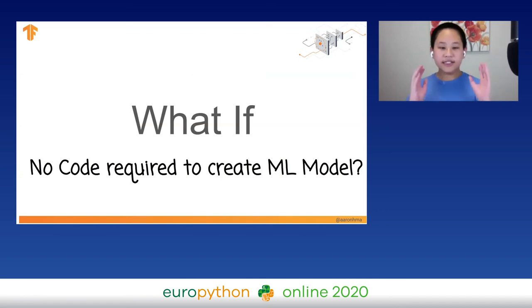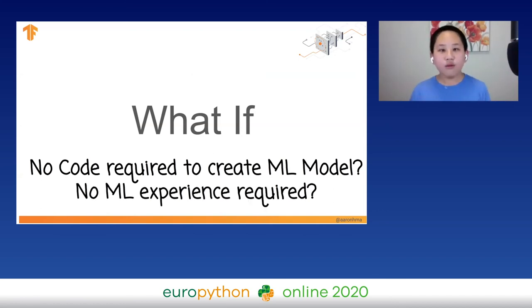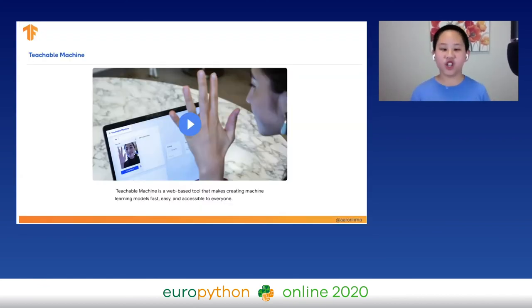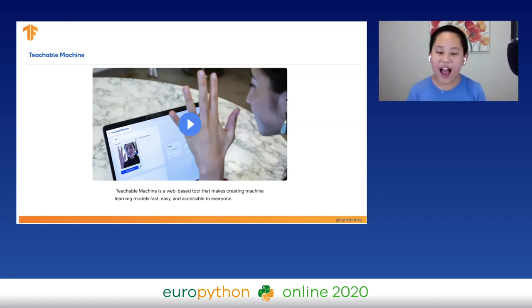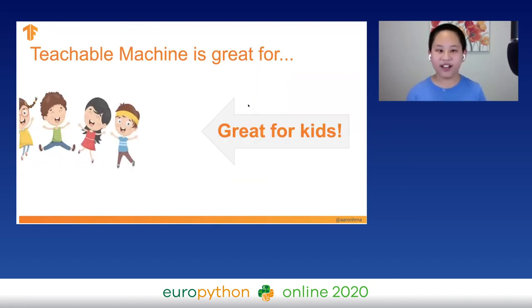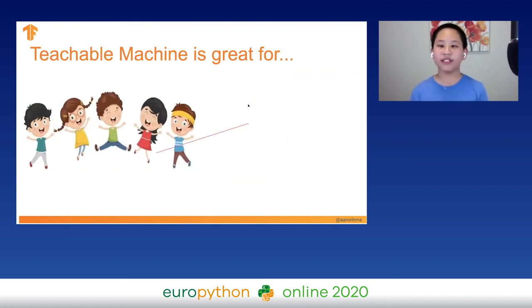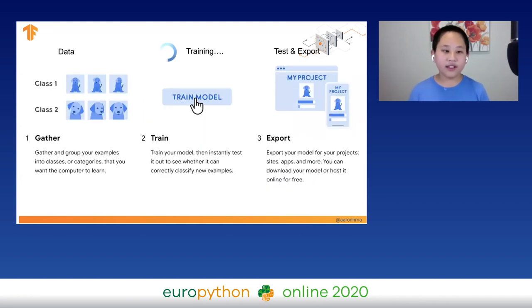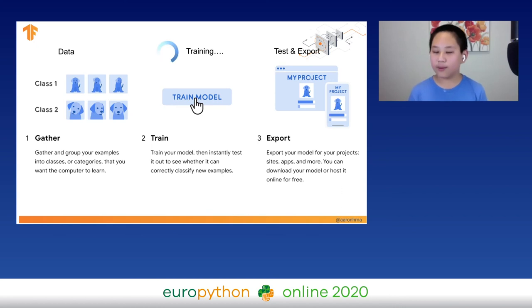What if there was no code required to create machine learning models, and no machine learning experience required? Introducing Teachable Machine — a web-based tool that allows you to create machine learning models fast, easy, and accessible for everyone. Teachable Machine is great for kids, but more importantly it's for everyone. It can currently handle images, sounds, and body poses. Here's how it works: gather your datasets, train your model, test it to see how it performs, and then export it for your own project.